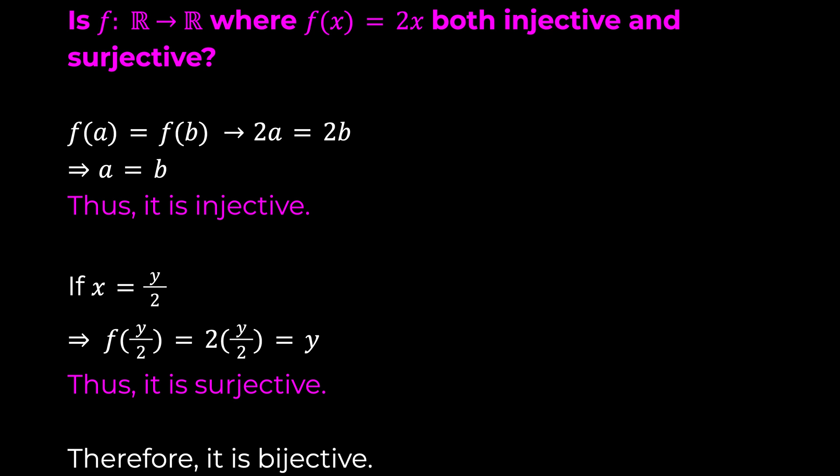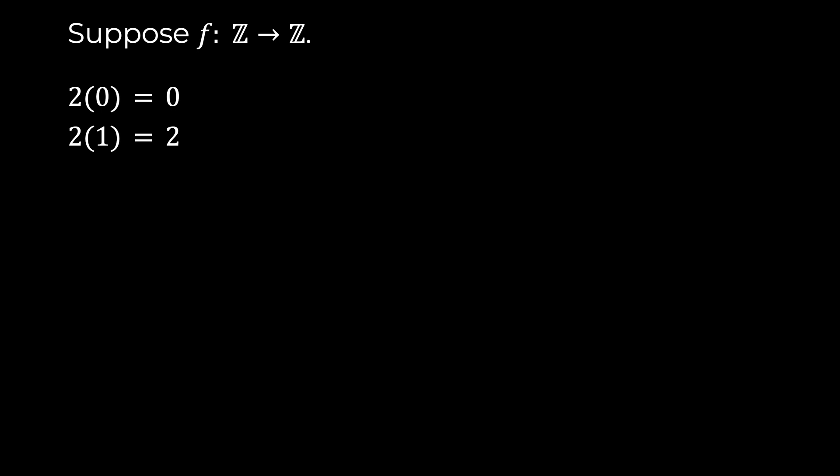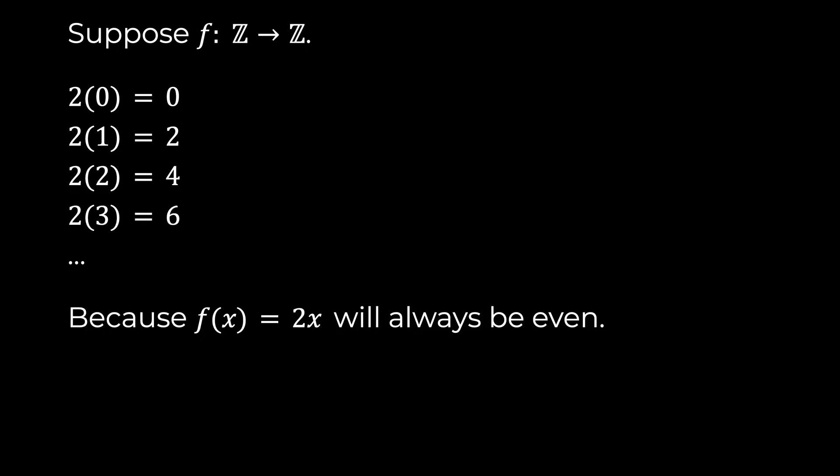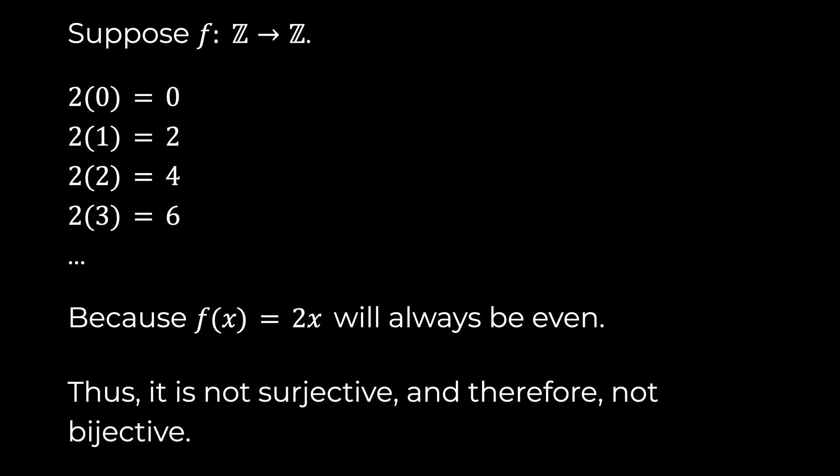However, let's suppose the function maps integers to integers. Then there is no value for x that maps to the numbers 3, 5, 7, or any odd number, since 2 times any integer is always an even number. So in this case the function is not surjective.